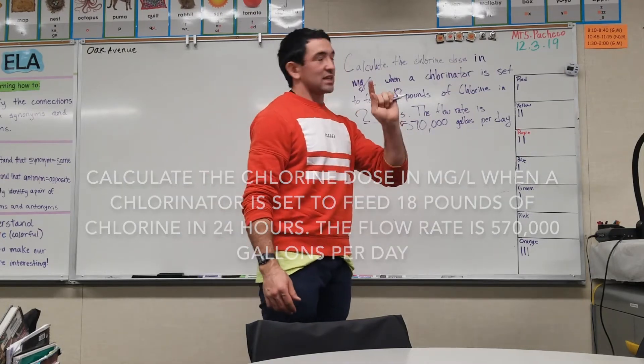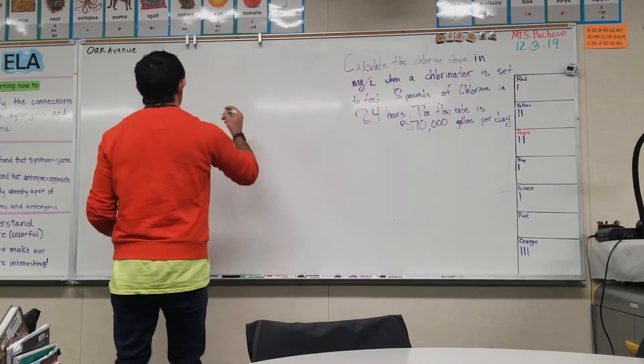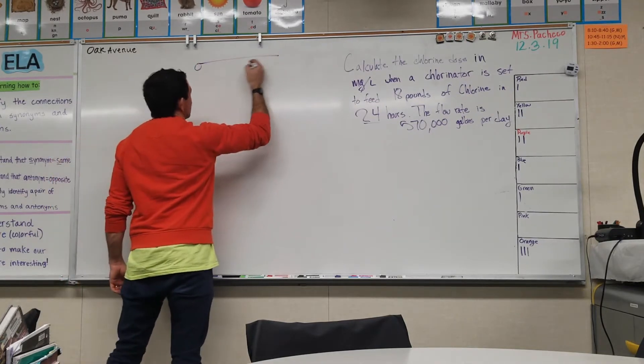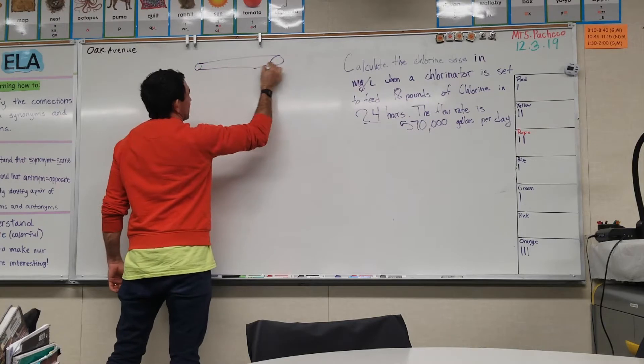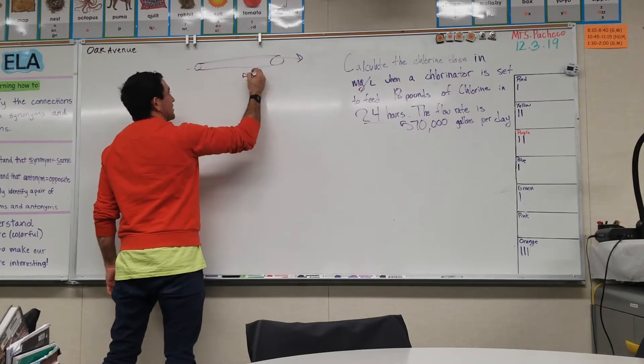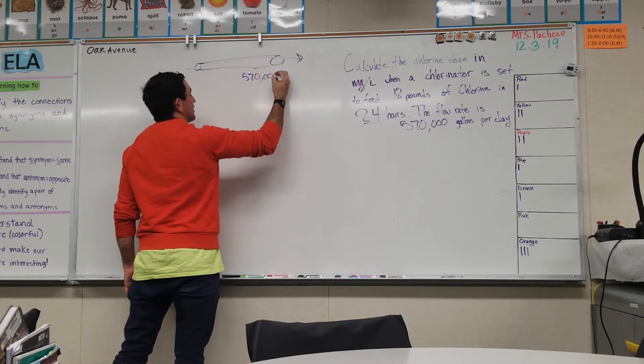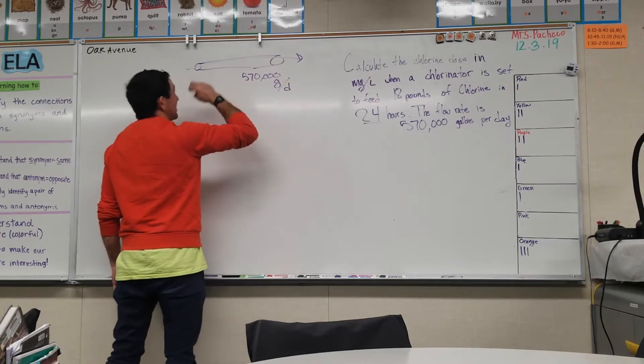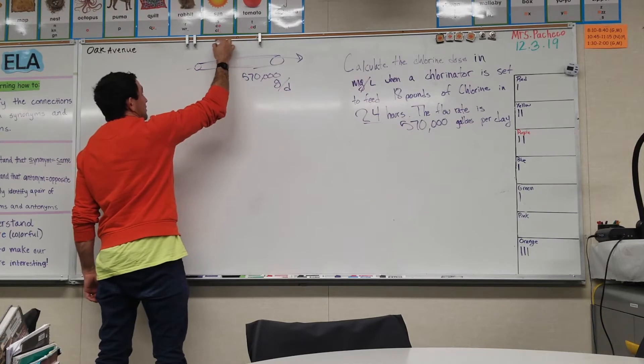So you got some sort of water flow going on. There's 570 thousand gallons per day flowing through that thing, and then there's this little chlorinator thing, a box.